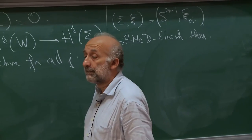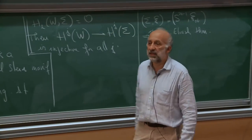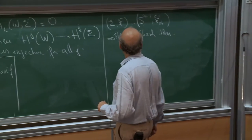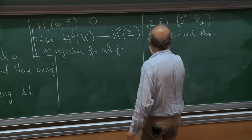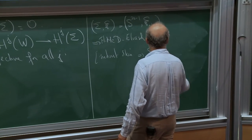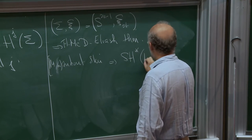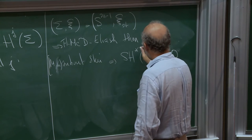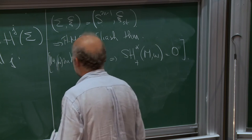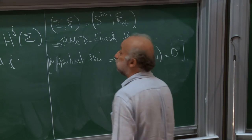Subcritical Stein means — by a theorem of Cieliebak — that it's a product of C by a Stein manifold. In particular, subcritical Stein implies that the symplectic homology of M omega — the plus part and constant part — vanishes. The corollary is: if sigma is a rational homology sphere and sigma xi embeds in a subcritical Stein manifold, then any symplectically aspherical filling will be a rational homology ball.